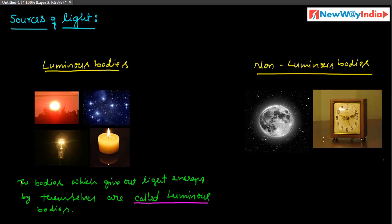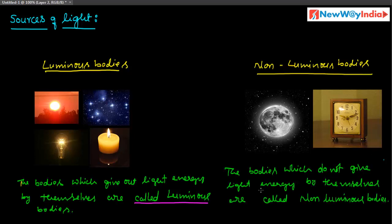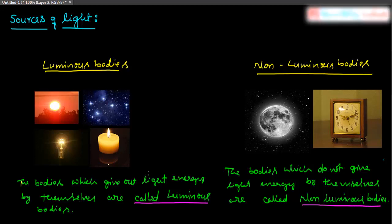The definition of non-luminous body: the bodies which do not give light energy by themselves are called non-luminous bodies. In this way we can observe different types of luminous and non-luminous bodies in our surroundings.